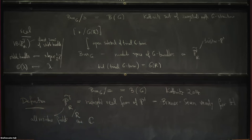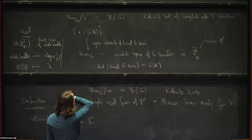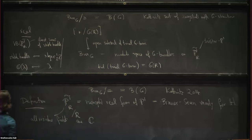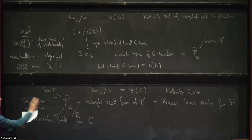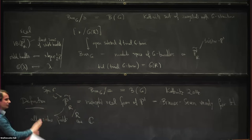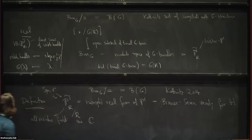Kottwitz also defined B(G) for global fields — that part is still mysterious. I am treating the twistor P1 as equipped with a distinguished point, just as in the Fargues-Fontaine setting. In the Fargues-Fontaine setting one can later get rid of this choice, and here too one could at some point eliminate it, but it is confusing to have this extra variable, so let me fix it.